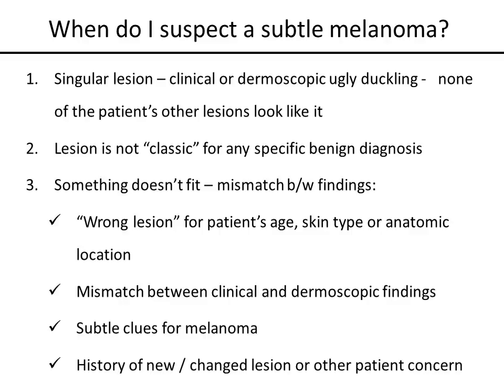When do I suspect a subtle melanoma? One: the lesion is a singular lesion — clinically or dermoscopically it's an ugly duckling, and none of the patient's other lesions look exactly like it. Two: the lesion does not display a classic pattern for any specific benign diagnosis. Or three: something doesn't fit — there's a mismatch between the findings. It could be the wrong lesion for the patient's age, skin type, or anatomic location.